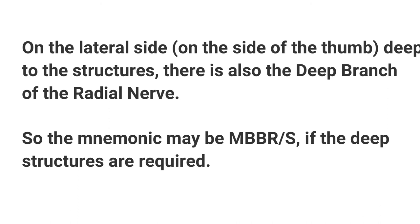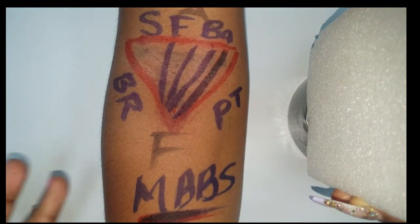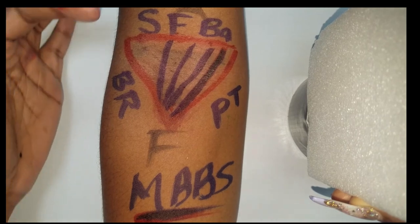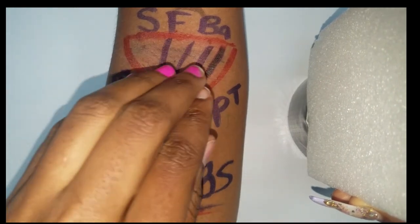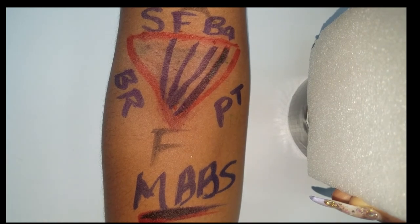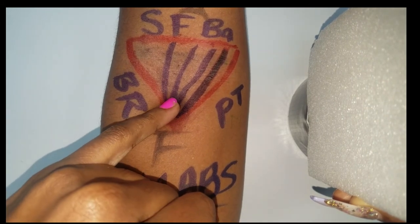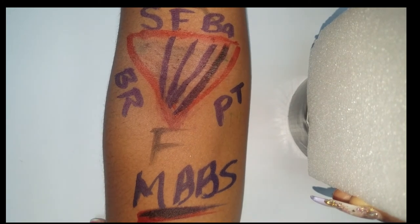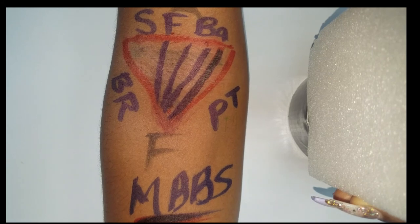Let's do a brief overview of everything. The cubital fossa is an anterior space, anterior to your elbow, at the transition between your arm and forearm. Lateral aspect: brachioradialis muscle. Medial aspect: pronator teres muscle. Roof: skin, fascia, and bicipital aponeurosis. Floor: capsule, brachialis muscle, and supinator. Contents (MBBS): median nerve, brachial artery, bicep tendons, and structures on your roof. That's it for the cubital fossa — hope you learned something. Practice, practice, practice. See you soon!